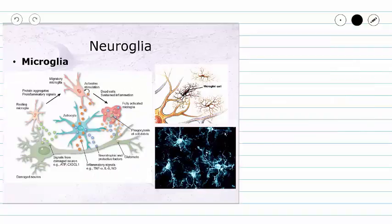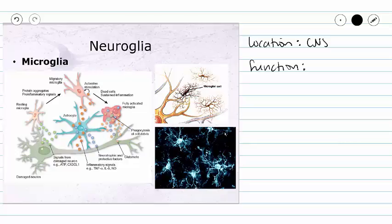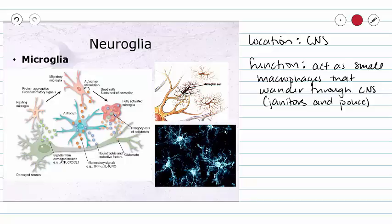Our third type of neuroglia in our central nervous system are called microglia. Our microglia are going to act as both janitors and police for our central nervous system. They are going to be macrophages that wander through the central nervous system and phagocytize any foreign particles that are found. Here in our picture on the left, we have a resting microglia that is stimulated by chemical signals from our neurons and our neuroglia. These chemical signals are going to activate our microglia to promote the phagocytosis of foreign particles or cellular debris.